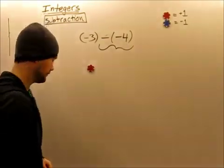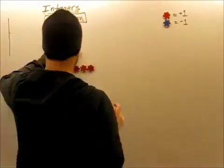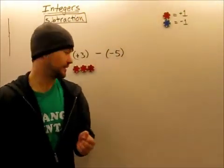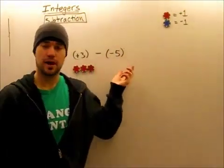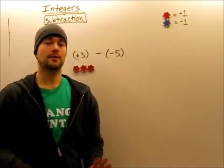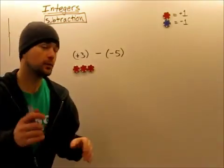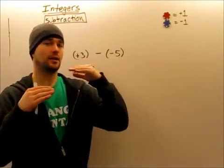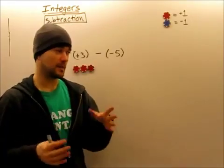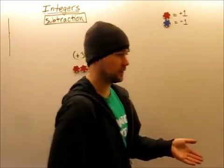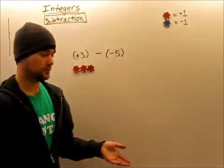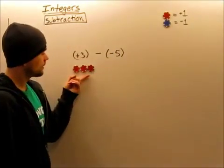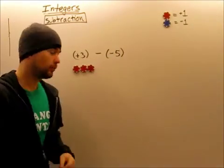I'm going to show you another example right away. Let's try: positive three subtract negative five. Intuitively we already know that we should be going positive, because a negative and a negative is an even number of negatives, and that means we end up reversing ourselves twice, which means we still go up the same way. So let's show it with counters.